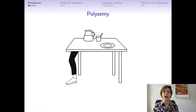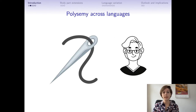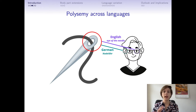To give you an idea of what I will be talking about today: I look at body part extensions that use a body part term for an object feature, as in 'leg of the table,' where we use our human leg to refer to the table leg. There are certain differences across languages — in English we call this part 'eye of the needle,' whereas in German, my native language, we use 'Nadel Öhr,' which is the 'ear of the needle.'